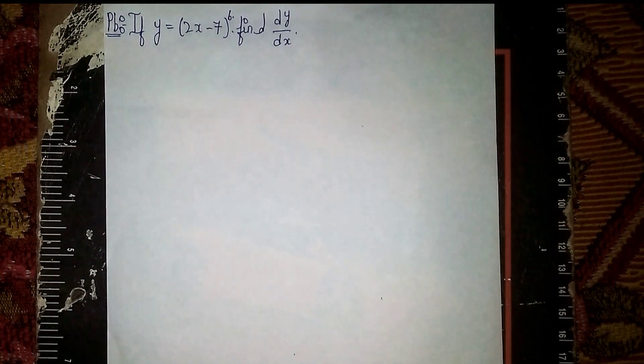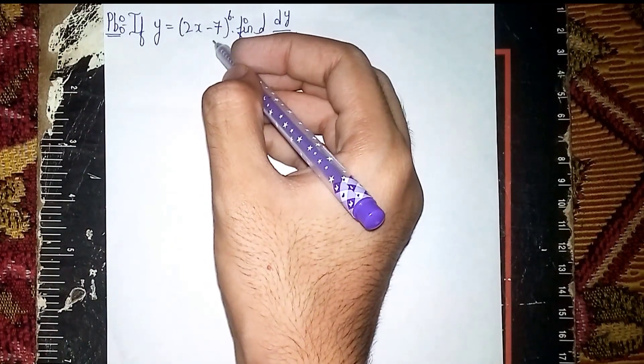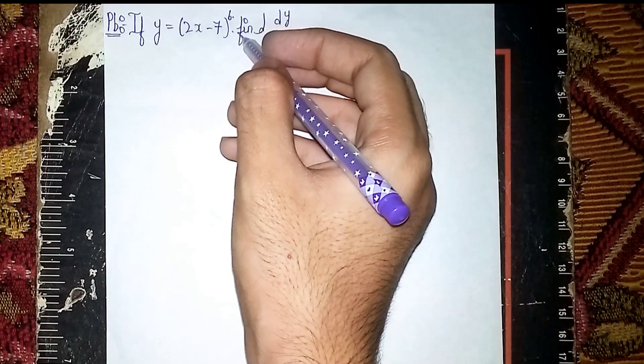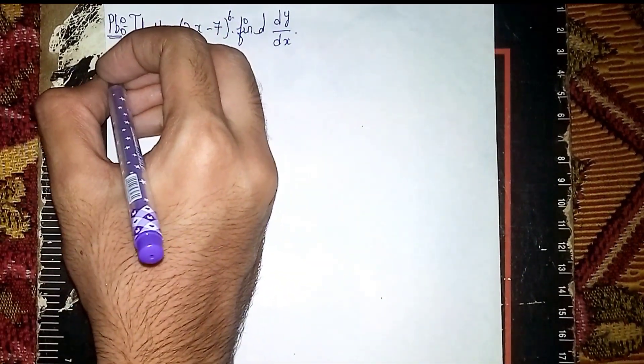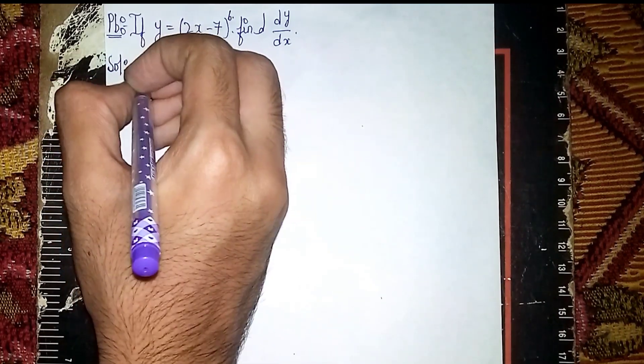Welcome back to my channel. Here's the question: if y is equal to (2x - 7)^6, find dy/dx. This is our differential question. For a straightforward solution for comparison, let's write what's given.